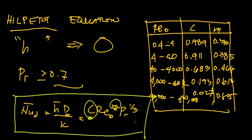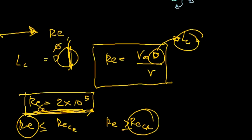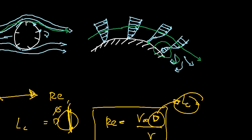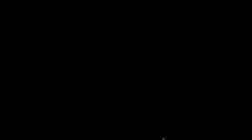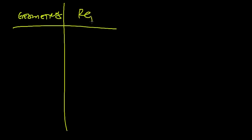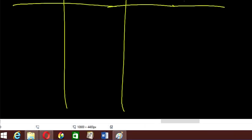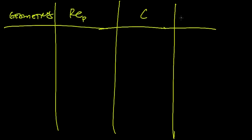Another is that the constants for Hilpert equation for non-circular cylinders. This is for circular cylinders. If we have non-circular cylinders, then we can have this table instead. Our Re, our C, and our M.